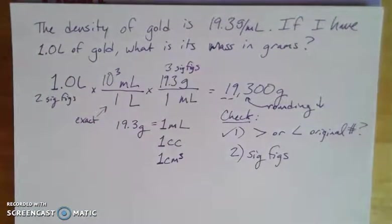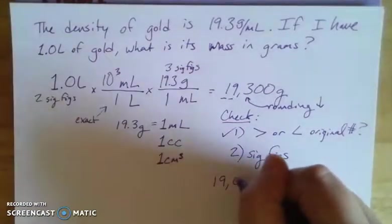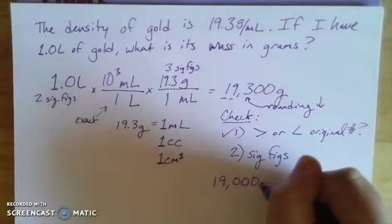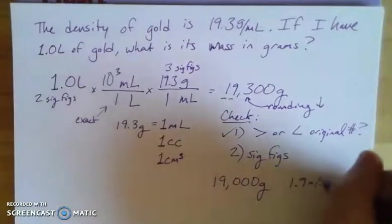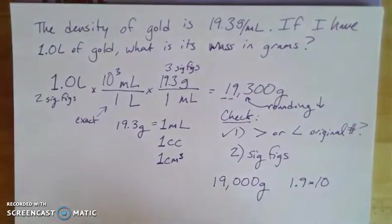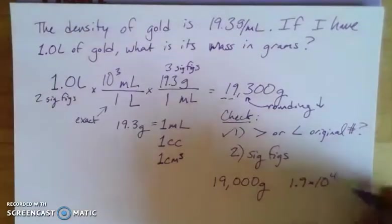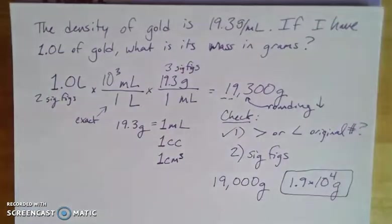in scientific notation, which we do because it's clearer - these zeros are a little bit ambiguous - then we're going to put it in scientific notation, which gives us 1.9×10⁴ grams with those two significant figures.